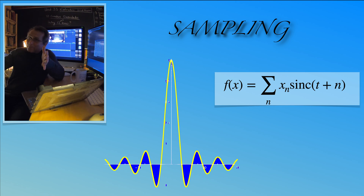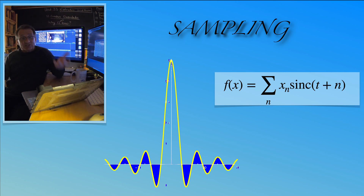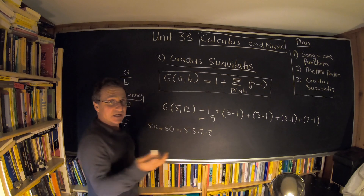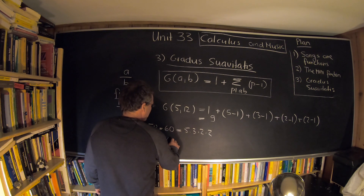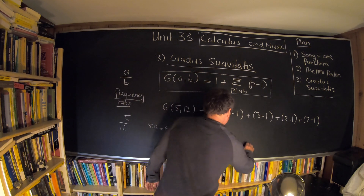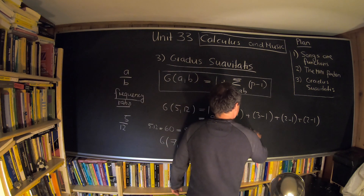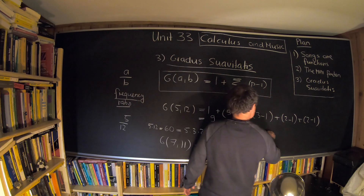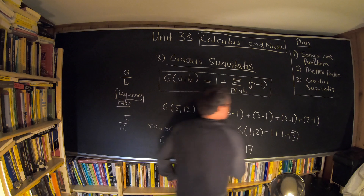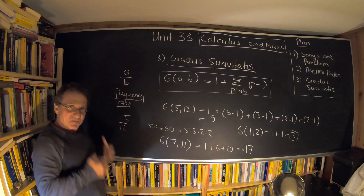Another interesting relation where calculus comes in: given sampled data points, we want to reconstruct the original function. The Nyquist-Shannon theorem tells us we need to sample at about twice the highest audible frequency — since our ears can't hear above 20,000 Hz, 44,000 samples per second is a very good sampling rate. For example, g(7, 11) = 1 + 6 + 10 = 17, which is a worse ratio. But g(1, 2) = 1 + 1 = 2, which is very good — the lower the degree of sweetness, the better the sound.